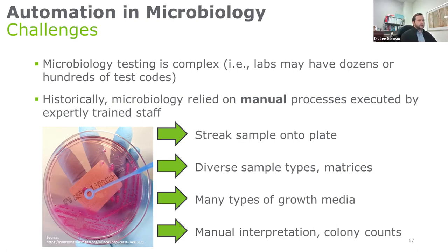Historically, microbiology has relied on manual processes executed by expertly trained staff. It takes years of training to make somebody really proficient in the art of microbiology. You have to streak a sample onto a plate — sometimes different streaking patterns depending on the specimen. There are diverse sample types and matrices: some are liquid, some are swabs, some are tissues. There are many types of growth media, and the type used for workup is dictated by the specimen type received. Then there's manual interpretation, and sometimes we may need to rely on the number of colonies to understand if this crosses an interpretive threshold for clinical significance.